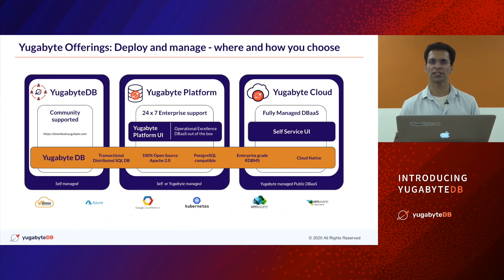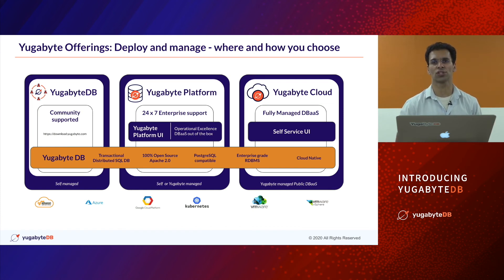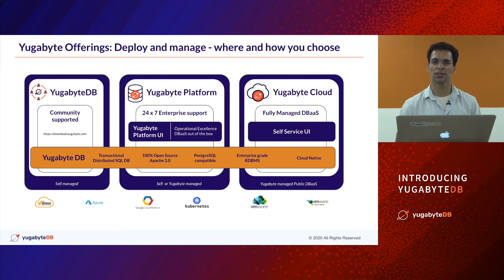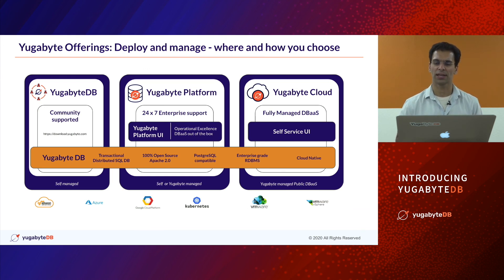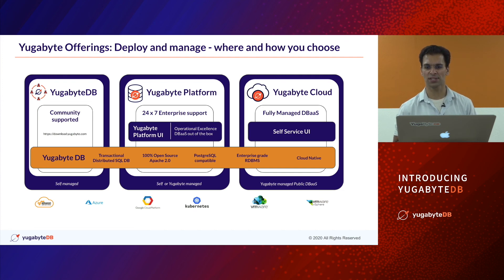What are the offerings that YugaByte has? The core database, YugaByteDB, is completely open source, community supported, and fully feature-rich — nothing held back for the enterprise. Even things like encryption, security, day-two operations like backups and restore are completely in the open source. The YugaByte platform combines everything YugaByteDB has, adds a UI layer allowing click-to-provision or REST API provisioning, with operational simplicity — it's like a packaged database as a service in software, and it comes with support. Finally, the third product, still in early stages, is YugaByte Cloud, which is a fully managed database as a service with a self-service UI.